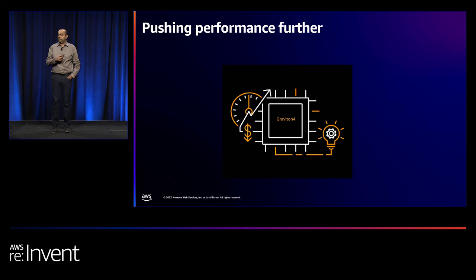When we first announced Graviton 2, we encrypted the DRAM interface on the processor, and we carried that over to Graviton 3. With Graviton 4, we're expanding that further — not only encrypting the DRAM interface, but also encrypting the interface between the Nitro card and Graviton, and encrypting the coherent link interfaces when they're in use.